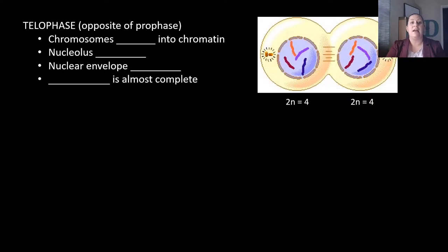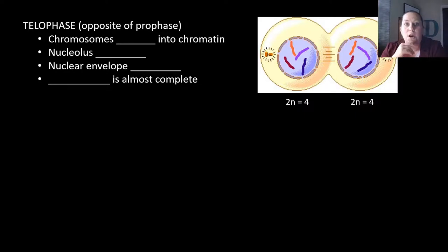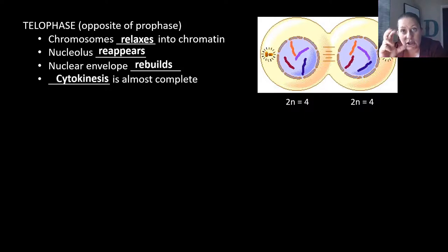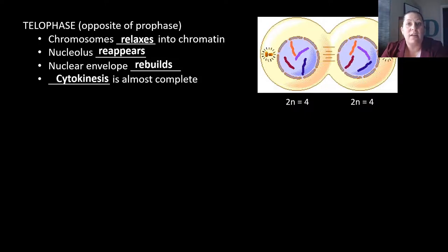Telophase is the complete opposite of prophase. In prophase, chromatin condensed into chromosomes; here, chromosomes relax back into chromatin. The nucleolus reappears, the nuclear envelope rebuilds, and cytokinesis — the pinching off into two cells by separating the cytoplasm — is almost complete. This is the opposite of prophase and we call it telophase.